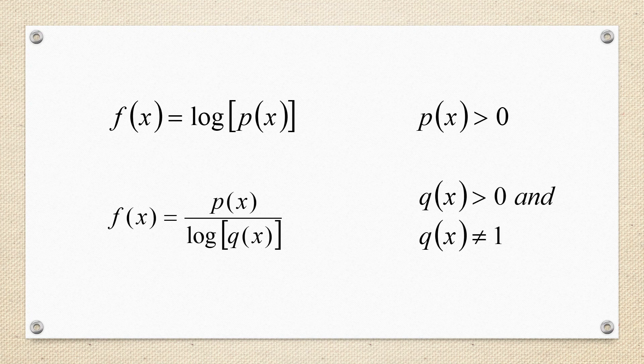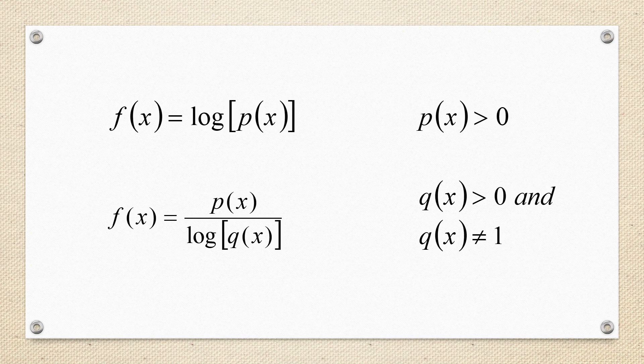Similarly, if we have log in the denominator, that is p(x) by log q(x), then according to the condition of logarithmic, we must have q(x) greater than 0. As well as we have another condition, that is q(x) is not equal to 1, because the value of log 1 is equal to 0, which would make the denominator 0 and the function undefined. Therefore, the function is defined only for q(x) greater than 0 as well as q(x) not equal to 1.